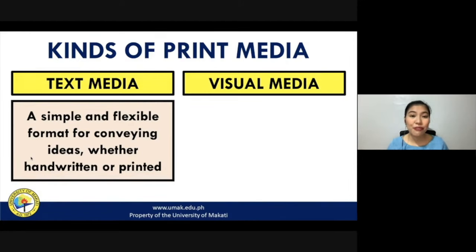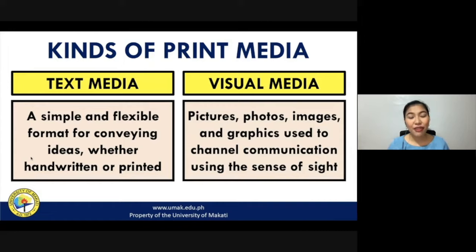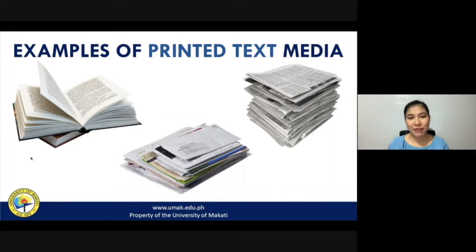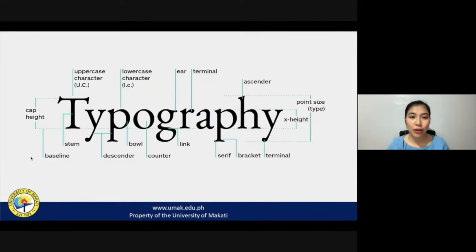Text media is simply described as a very simple and flexible format for conveying ideas, whether handwritten or printed — basically words, phrases, and sentences transformed into handwritten or printed format. Visual media, on the other hand, is described as pictures, photos, images, and graphics that are used to channel communication using the sense of sight. Examples of printed text media include books for school, books for leisure, handwritten or printed letters, and newspapers. One key feature of print media is typography, which sets it apart from other kinds of print media.